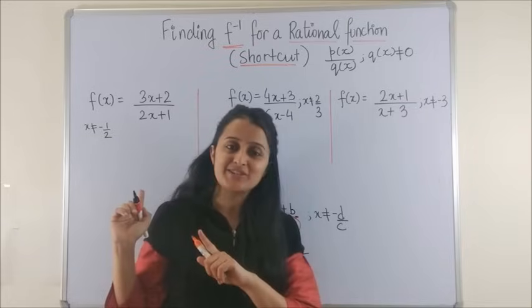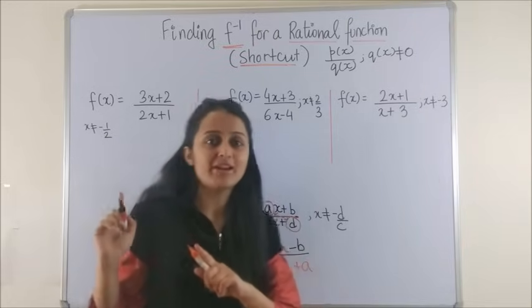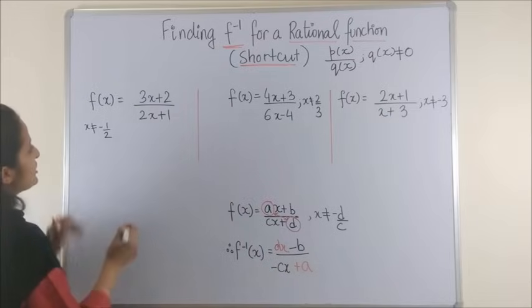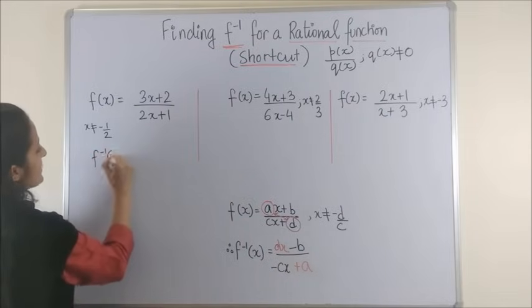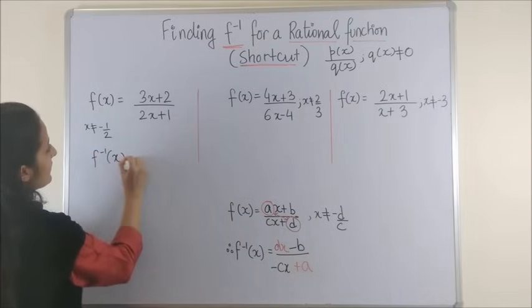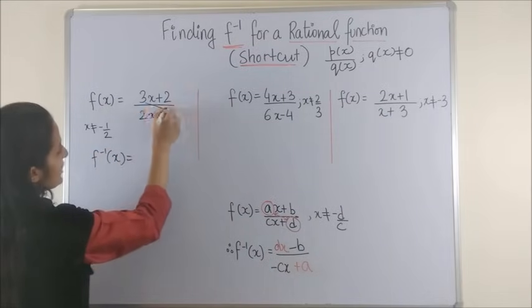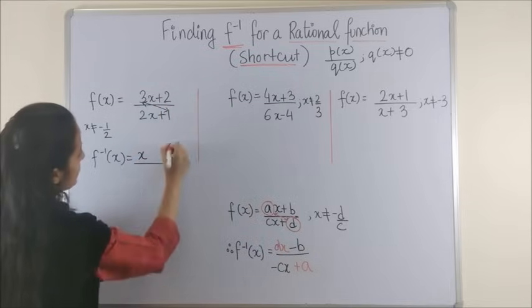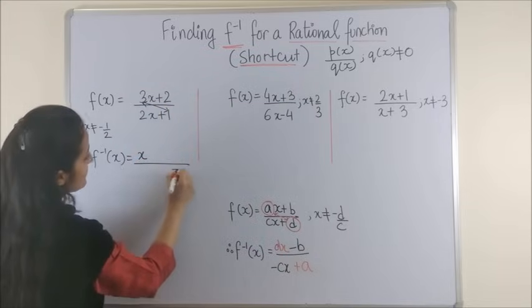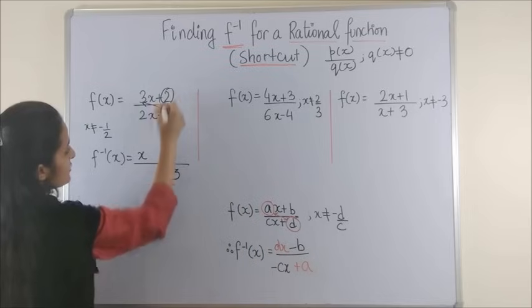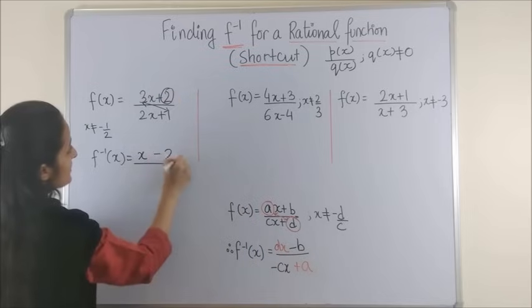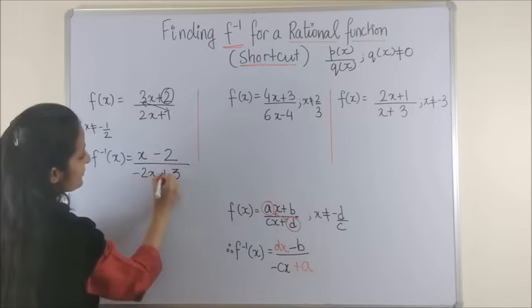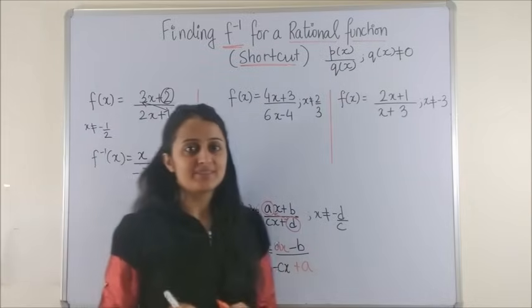Now let's take up the questions one by one. For the first question, f inverse of x: we exchange the two outer values, so this one becomes x and this one stays 3. Now this 2 changes to minus 2 and this 2 again changes to minus 2. And that was the answer.